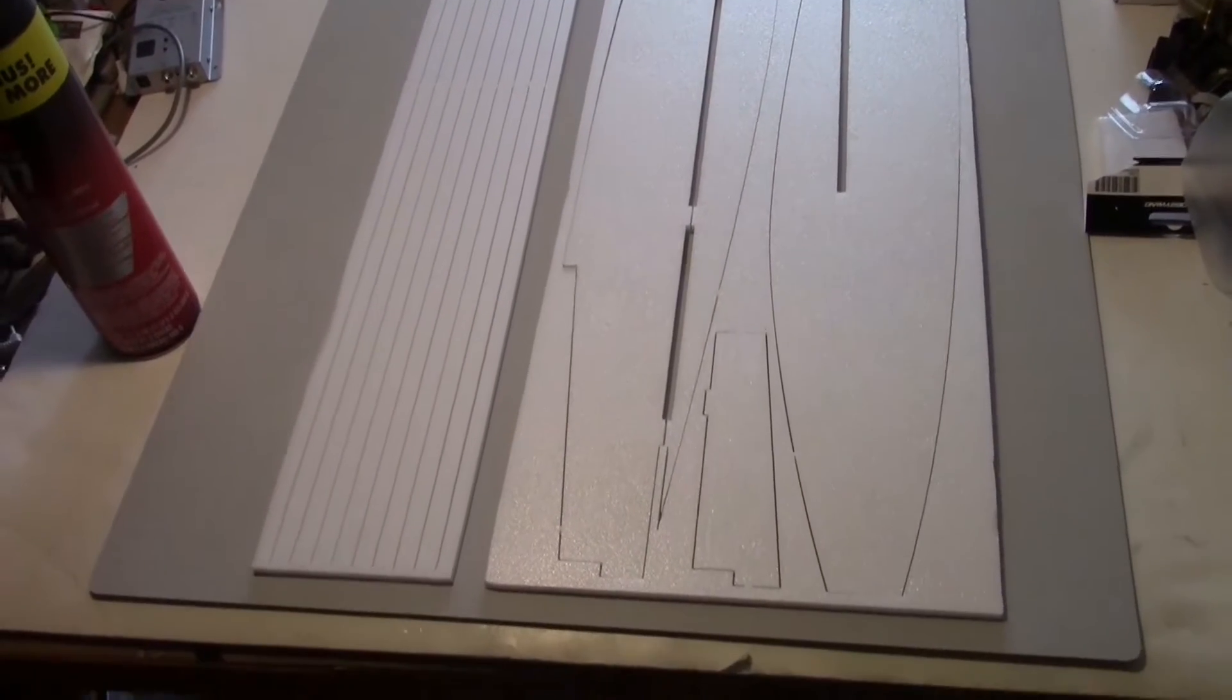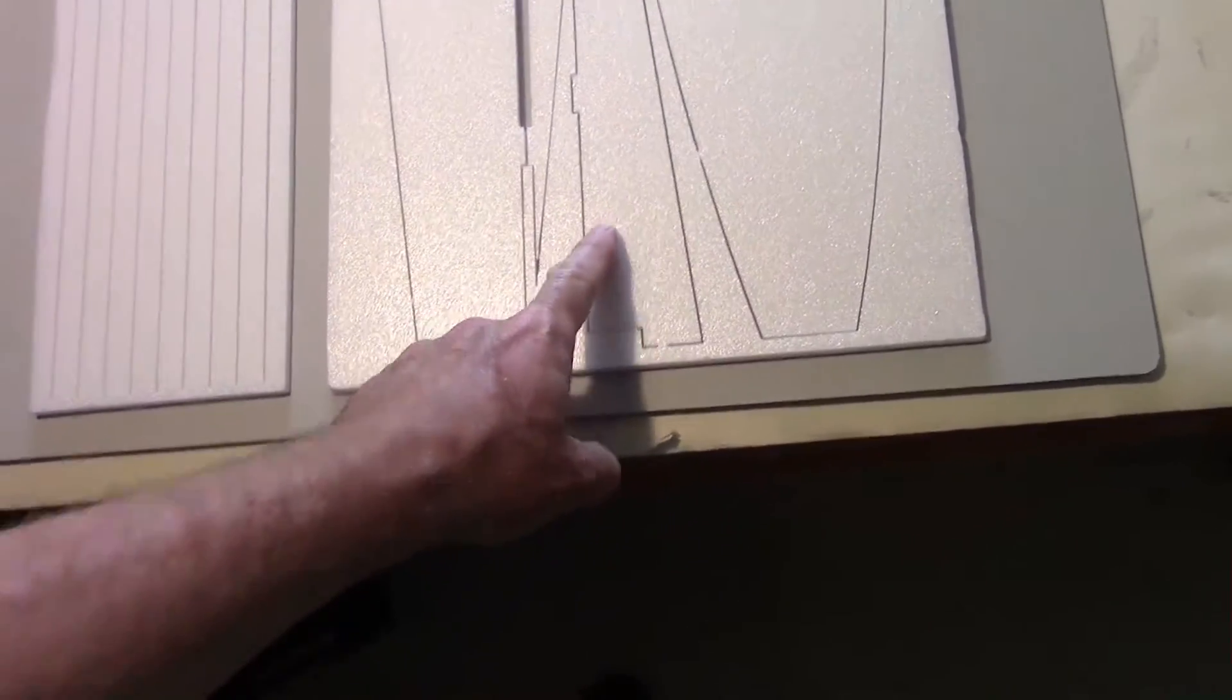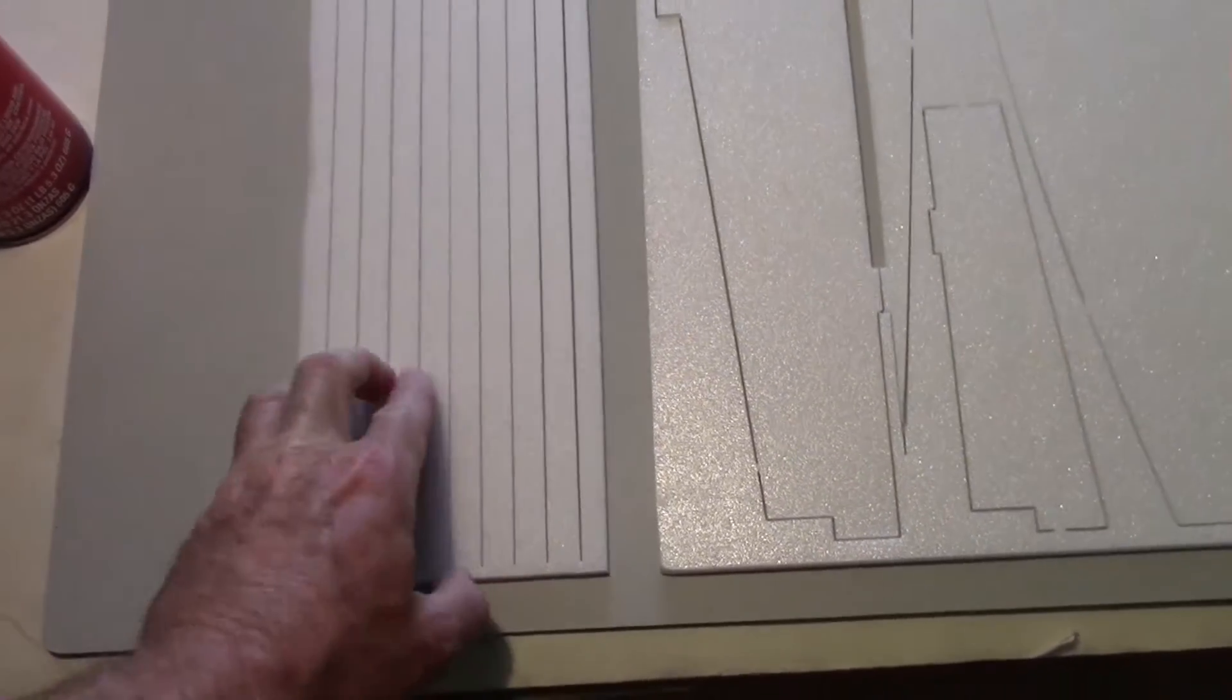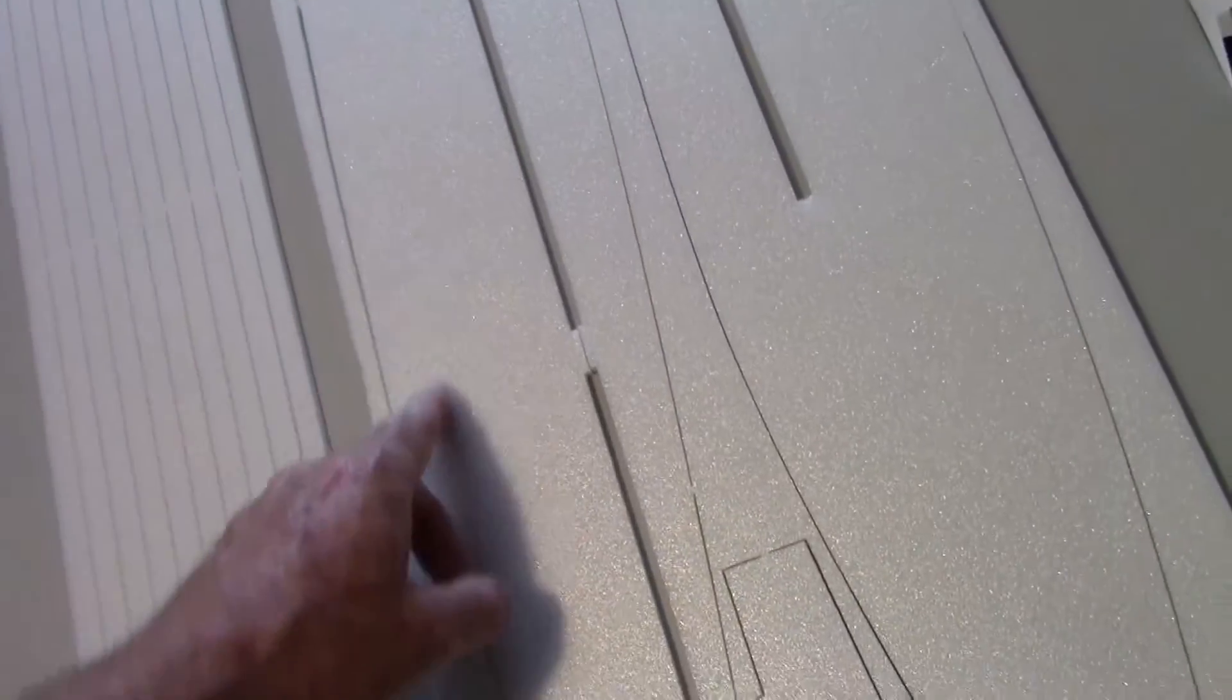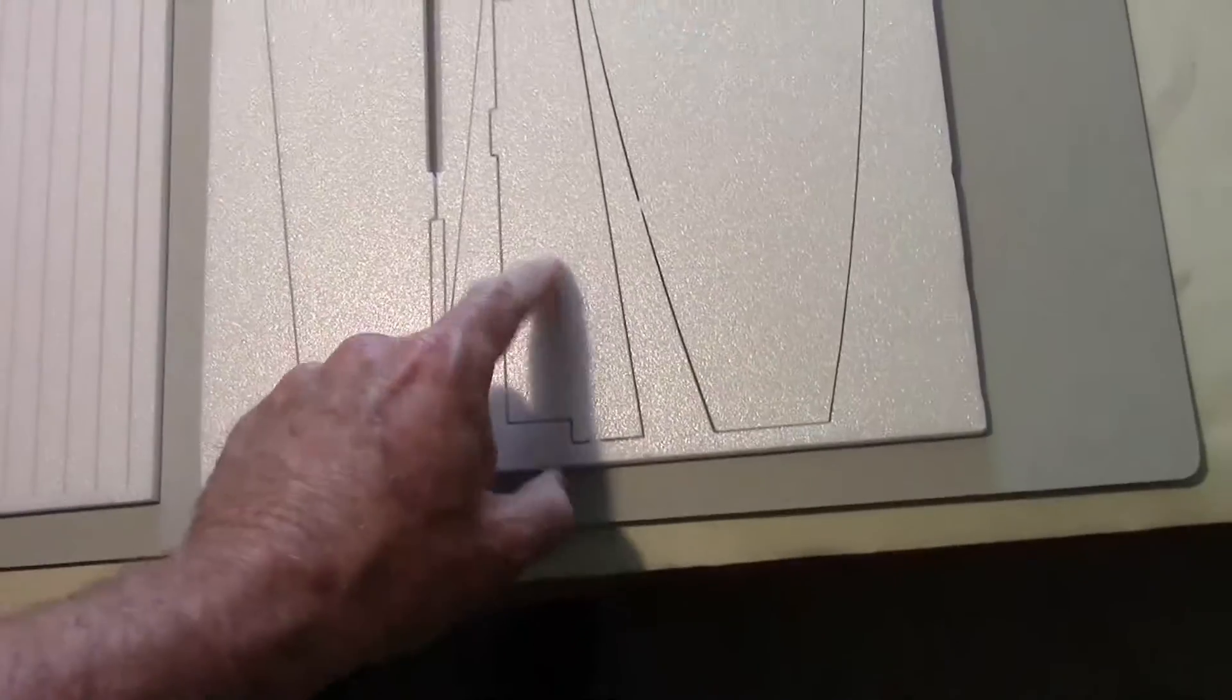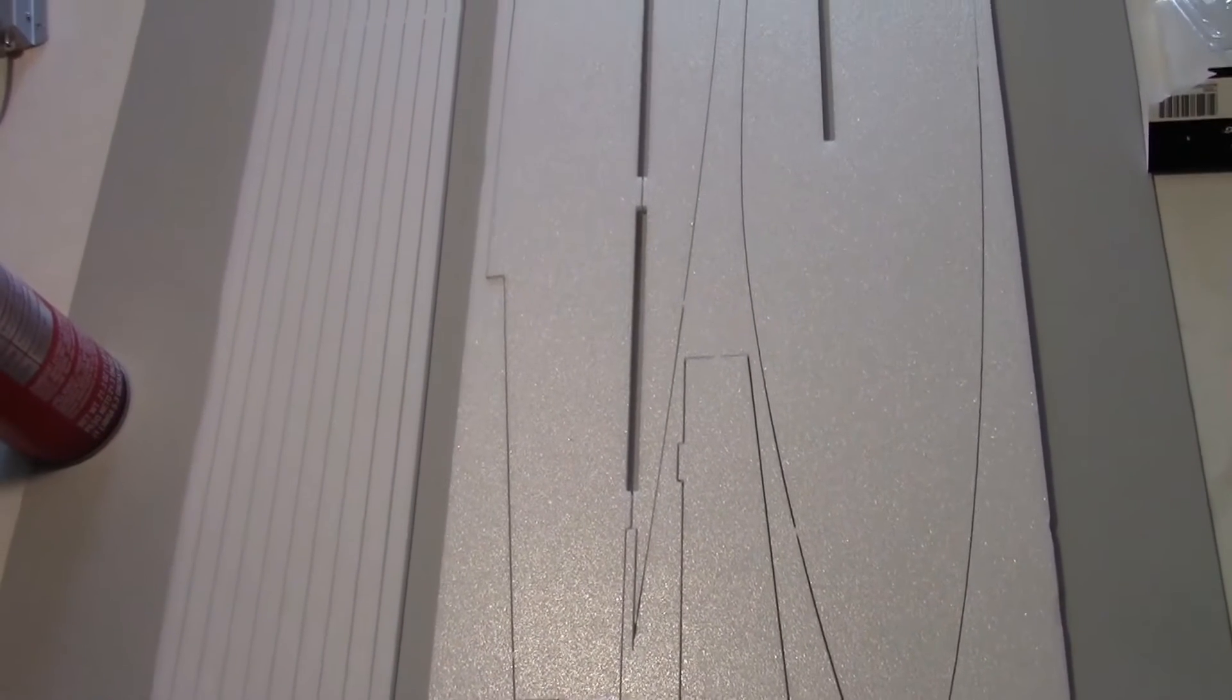So next, for the Polaris, we need to glue on these side extensions onto the ends of the fuselage sides right here. There's two of them, and then we have to break off four of these depron pieces and glue them along the edges. I think we're going to use some of this 3M77 to do it, but I may use CA to glue these side extensions on the ends. Okay, so let's go out to the shop.